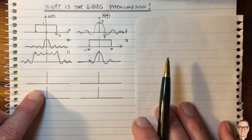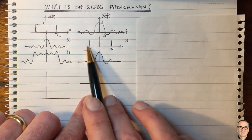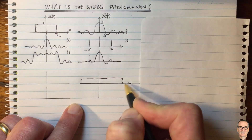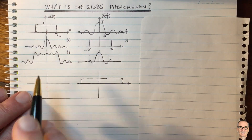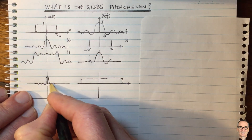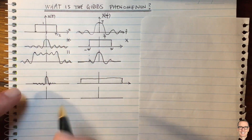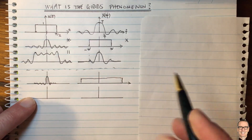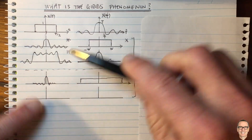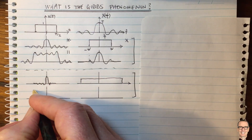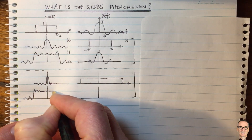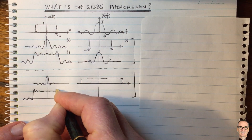Before we get to the exact Gibbs phenomenon, let's look at one more bandwidth which is a bit wider. If the bandwidth is wider in the frequency domain, then the signal in the time domain will have a narrower sinc function. Because it's got a narrower sinc function in the time domain, when you convolve the square with this narrower one, you're going to get a function which looks sharper, where this overshoot happens more quickly and then it dies down to a more flat top.